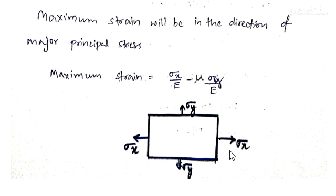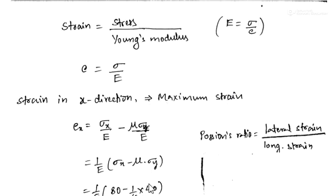The strain in the x-direction is given by: εx = σx/E − μ · (σy/E). We know Young's modulus E = stress/strain, so strain = stress/E. The strain in the x-direction has two components: the direct strain from σx increasing the length, and a negative contribution from σy acting in the y-direction which decreases the dimension in x.